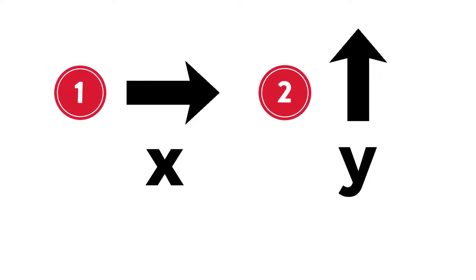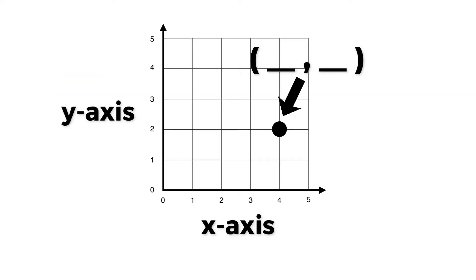The first number always tells us where to go horizontally on the X-axis, and the second number always tells us where to go vertically on the Y-axis. So if a point had an ordered pair of 4, 2, we would start at the origin and go four hops right on the X-axis, and then two hops up on the Y-axis.